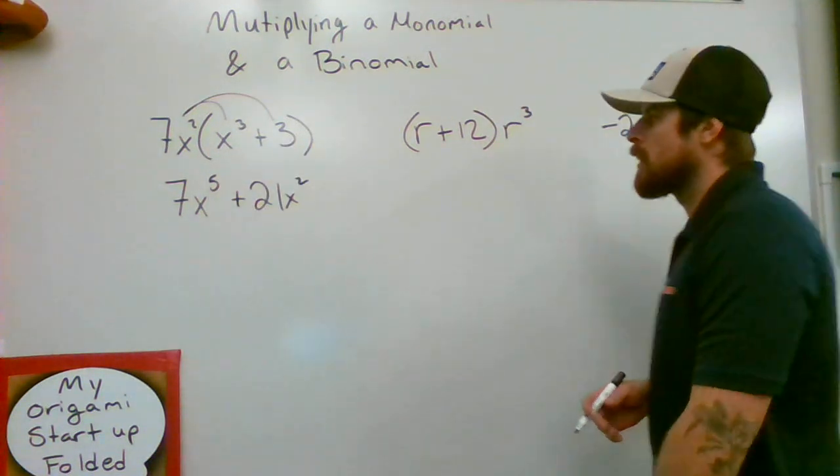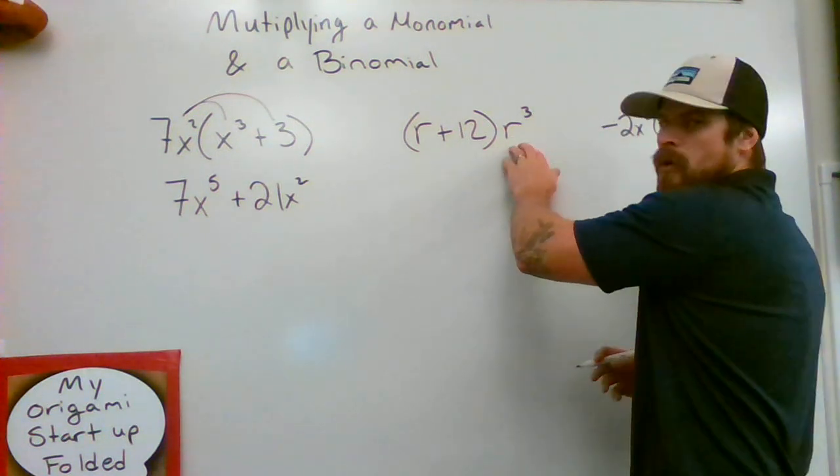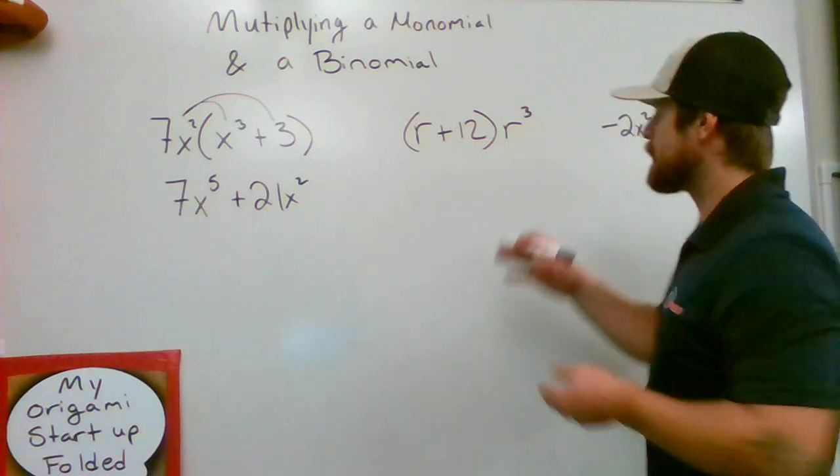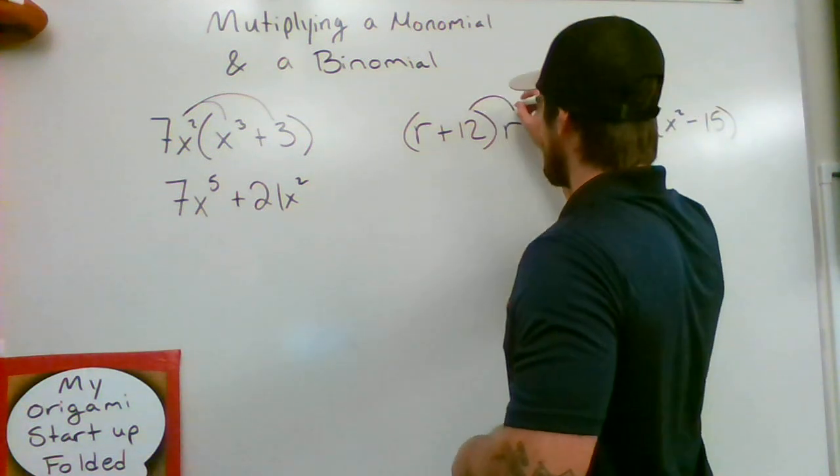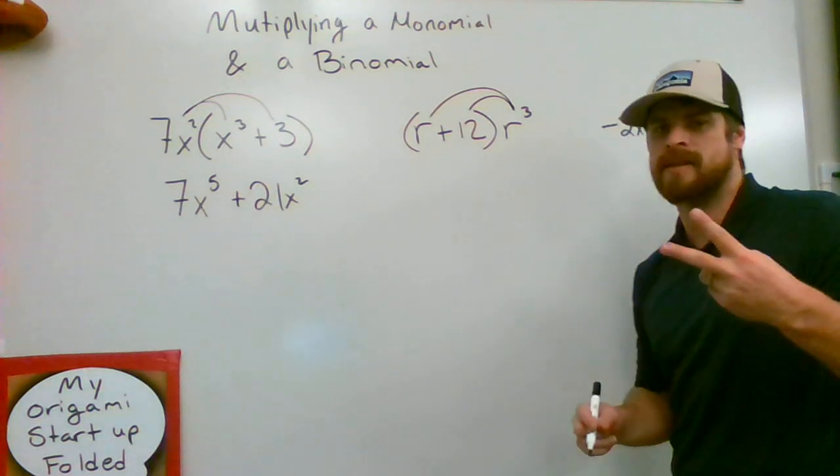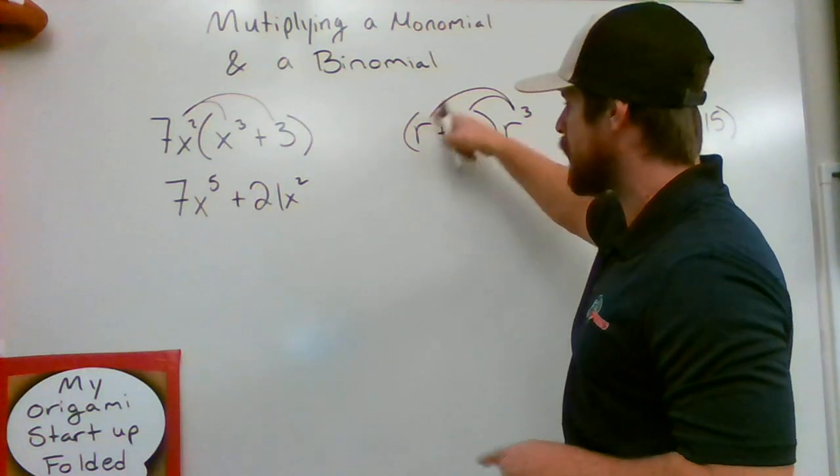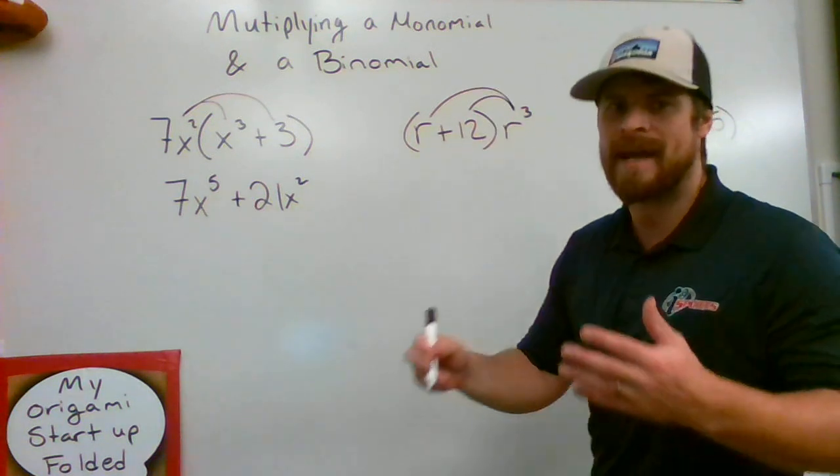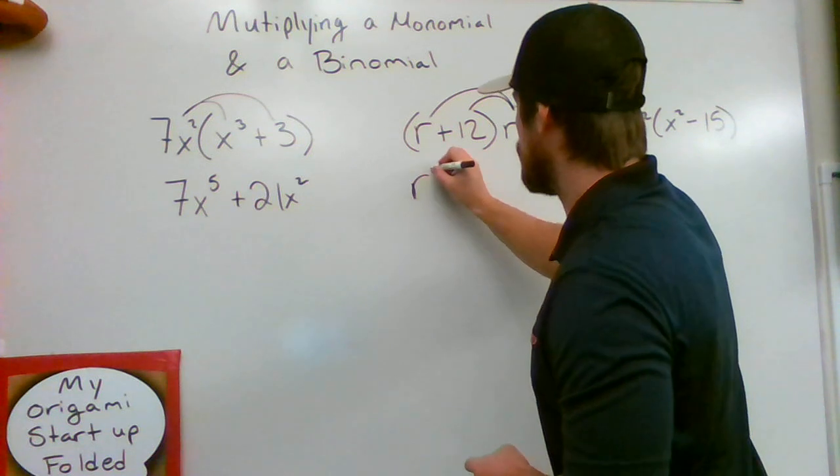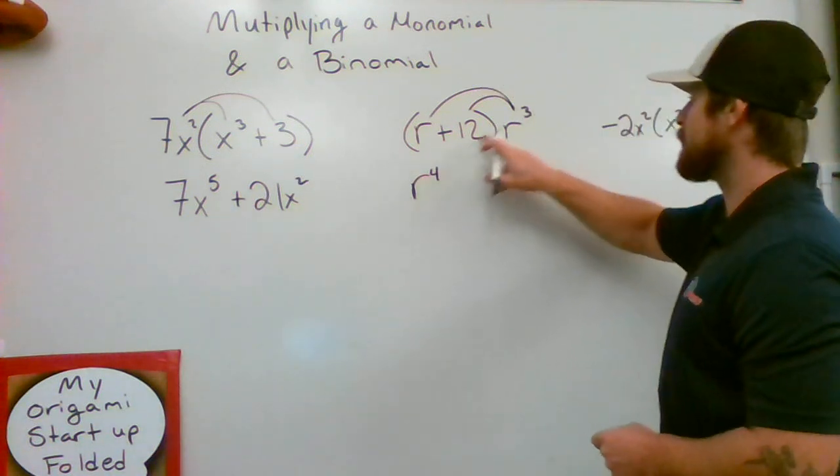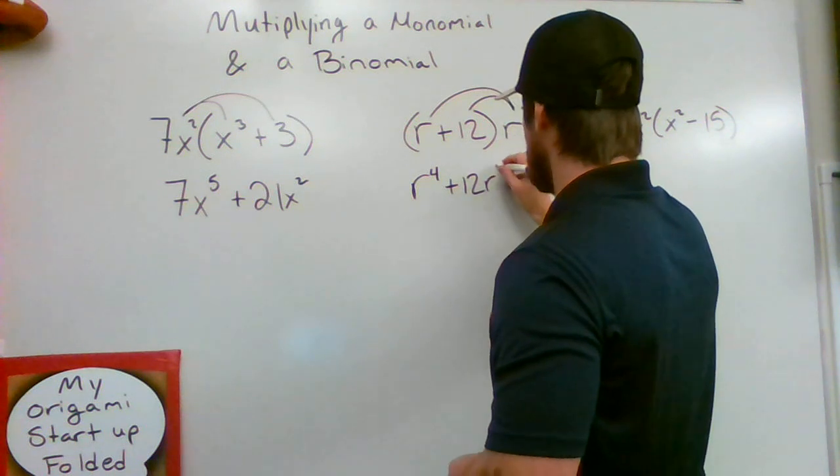Okay. Here, I have the monomial on the right side. No different. It's still attached with no operation in between, which means we need to multiply that by both of these two terms on the inside. R³ times R. There is a 1 above that R. We just don't show it. So we're going to add that 1 and that 3 together to make R⁴. And 12 times R³ is going to give me just 12R³.